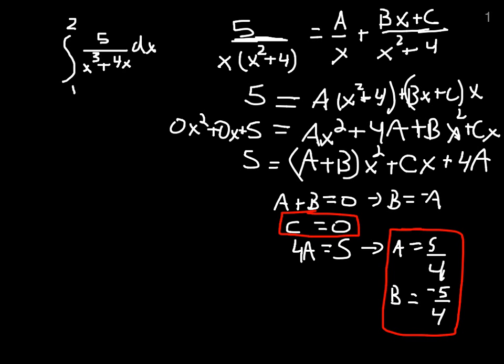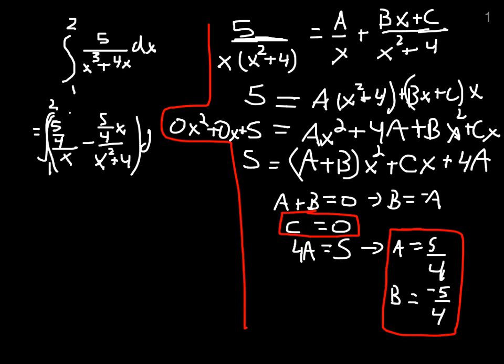Now that we have all our constants, we can decompose the integral to 2 integrals from 1 to 2: positive 5 fourths over x minus 5 fourths x over x squared plus 4. We'll pull out the 5 fourths and be left with 1 over x minus x over x squared plus 4.